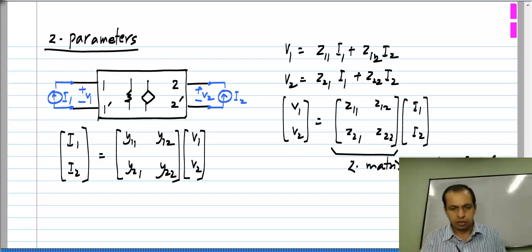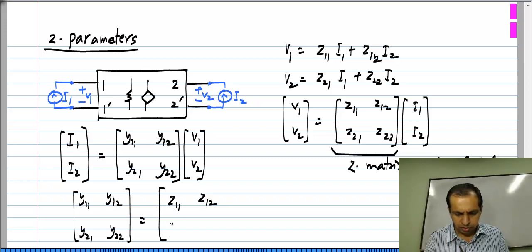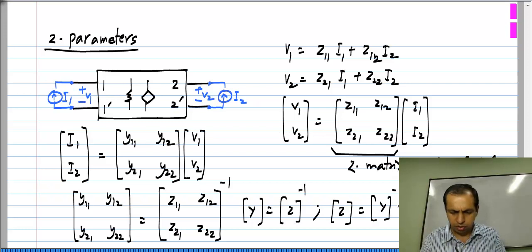Now, clearly looking at this, you realize that the Y matrix is the inverse of the Z matrix. So Y is the inverse of Z, or Z is the inverse of Y.